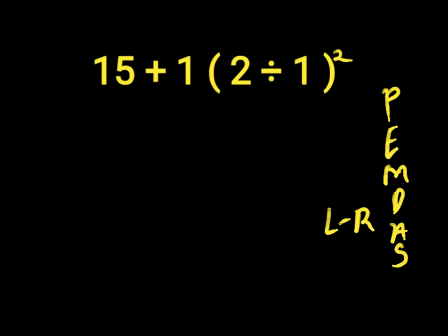First, we'll solve our parenthesis: 2 divided by 1 gives us 2. Then we raise it to the power of 2. We have 15 plus 1 times 2 to the power of 2. 2 to the power of 2 is 2 times 2, which gives us 4.